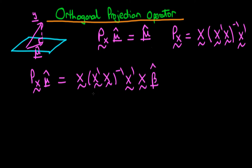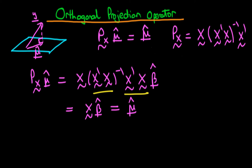Looking at this expression, we have the inverse of a matrix times itself, which yields the identity matrix. So we get X times the identity matrix times β̂, which is just Xβ̂. That means the projection operator times μ̂ equals Xβ̂, which we know is just equal to μ̂. So the orthogonal projection operator works correctly in this circumstance.